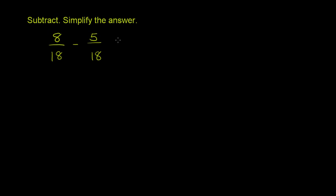If we have the same denominator, the denominator in the difference is going to be the same as the denominators in the two numbers that we're subtracting. So it's going to be 18. Our numerator is going to be the difference between the numerators. So in this case, it is 8 minus 5.